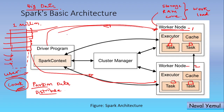Now what does the driver program do? The driver program sums up all this — 0.5 and 0.6 — and it will tell the user that there are 1.1 million rows. And this is all done in a fraction of seconds.